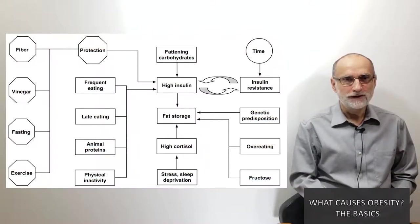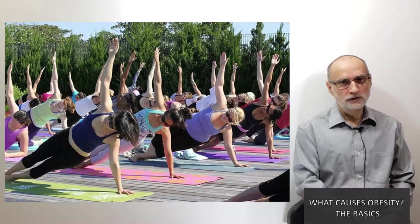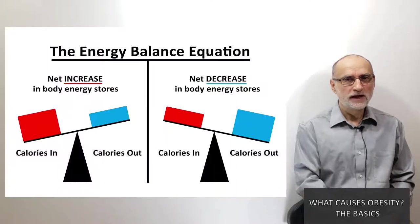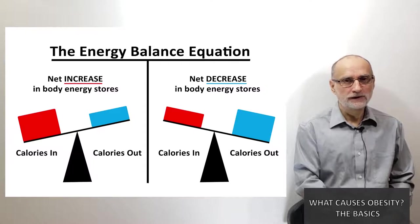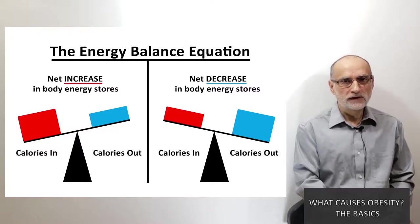Let's start with the conventional calorie counting method: eat less, exercise more. Basically, this is the general formula for weight loss today. The whole idea is based on the calories in, calories out model. If your energy intake is less than your energy expenditure, you will lose weight. Conversely, if you consume more calories than you expend, you will gain weight.